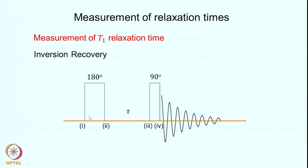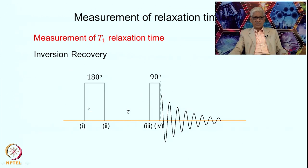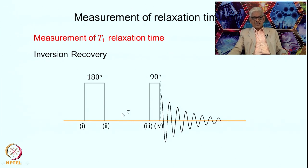The inversion recovery pulse sequence is pretty simple. We have a 180-degree pulse in the beginning, which is a hard pulse applied to all the spins. Then you wait for a time tau, and at the end you apply a 90-degree pulse, after which you collect the data as the FID. The time points are labeled 1, 2, 3, 4, and the data collected is at point 5. This tau is an adjustable period, and depending on how you set it you will get different kinds of signals in your NMR spectrum.